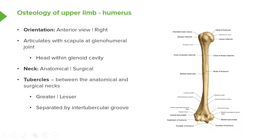The second neck is the surgical neck, which runs around the humerus below or inferior to these two tubercles. We have the greater and the lesser tubercles, and these are important in offering sites for muscles to attach. The rotator cuff muscles attach to the greater and the lesser tubercles. These two tubercles are separated by a groove known as the intertubercular sulcus or the intertubercular groove. Various muscles attach in this groove, and it also contains the tendon of the long head of biceps brachii that runs up in this direction.